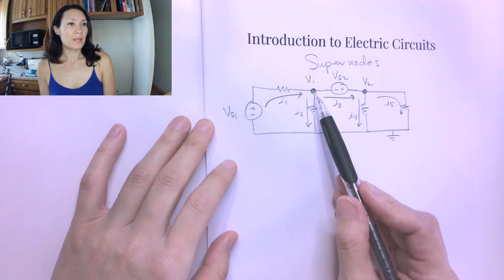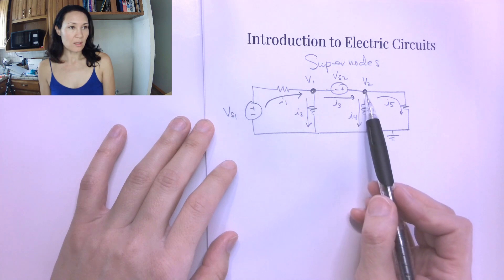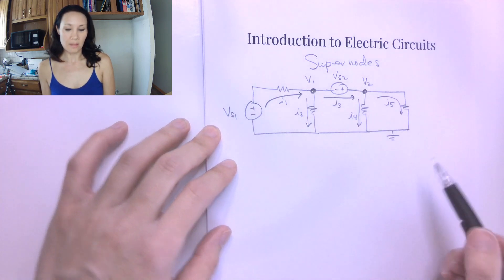But one thing that is new is we have this VS2 source in between nodes V1 and V2. So how do we handle this?